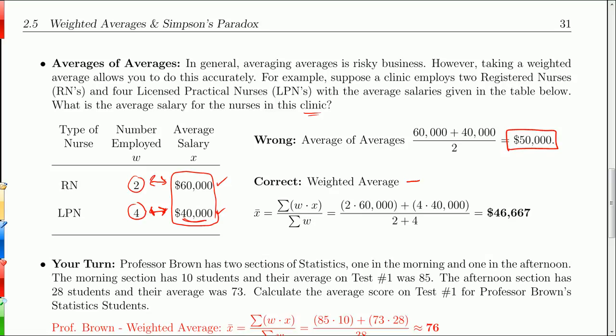So the correct way is with the weighted average, where we're going to sum up the weights times the x's over the sum of the weights. And so what we have is 2 times $60,000 plus 4 times $40,000. So these are the w's, these are the x values, w, x. And you divide by the total weights, which is 6. When you do that, you get $46,667. So that is actually the way to average these. That gives you a correct average. And notice it's less than the $50,000 when you just average the averages.